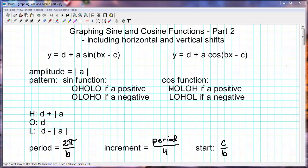And for cosine function, our pattern is here. Again, that's if a is positive. If a is negative, that pattern is flipped, so all the H's become L's and all the L's become H's.